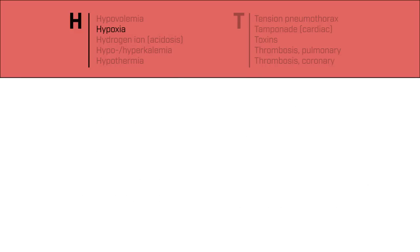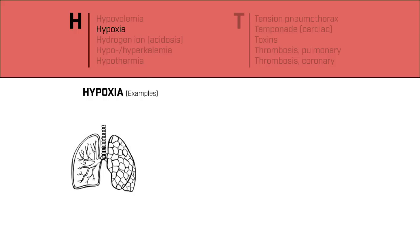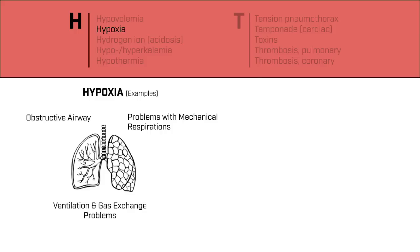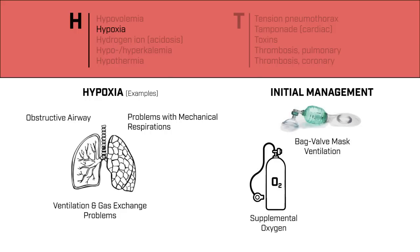Hypoxia is a lack of adequate oxygenation to your organs and tissues. Because your respiratory system is a major determinant of oxygenation, you should pay close attention to your patient's airway and breathing. Make sure your patient is protecting their airway and that it is patent. Make sure they are breathing and have bilateral breath sounds during respirations. Oxygen saturation measured by a pulse oximeter can also help in determining a patient's oxygenation. If needed, oxygen may be administered, and if the patient is not protecting their airway or not breathing adequately, further interventions such as BiPAP or endotracheal intubation may be considered.